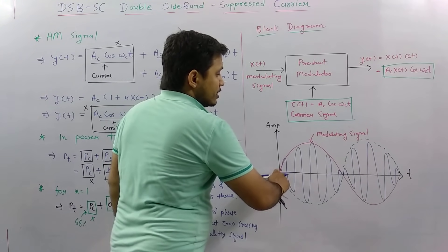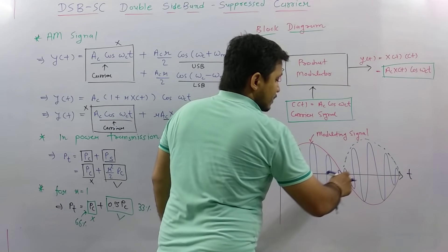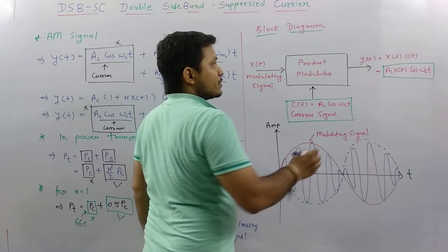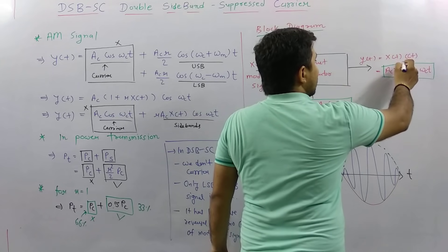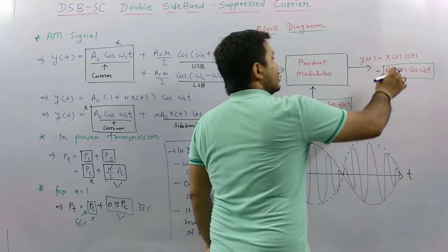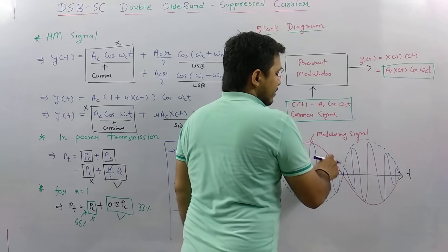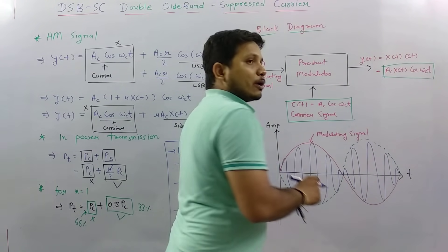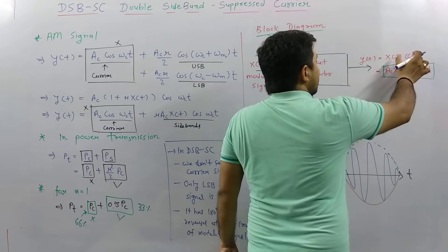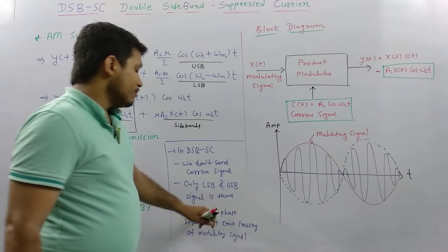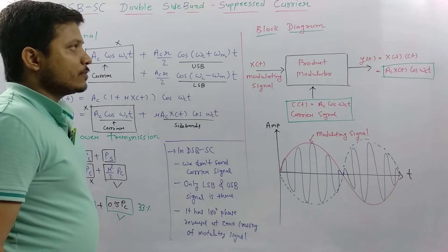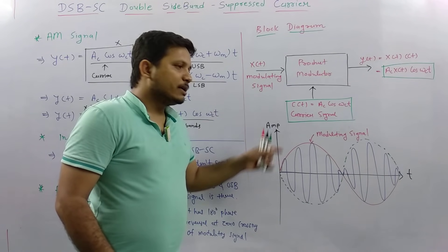To elaborate: the modulating signal is positive in the first half cycle, so the output is positively multiplied with C(t). But when the modulating signal goes negative — at and after zero crossing — the output becomes negatively multiplied with C(t), resulting in a 180-degree phase reversal. This is why the DSBSC waveform shows that characteristic phase flip at the zero crossings of the modulating signal.